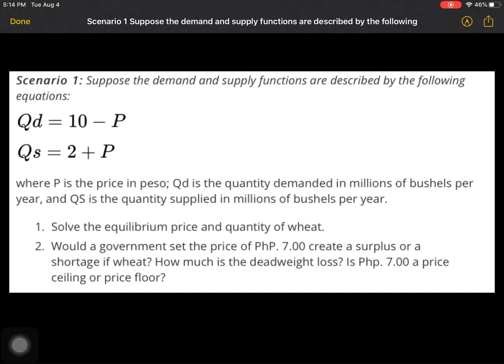we are going to answer scenario number one in the exercises before this video. This exercise is asking you to compute the price ceiling and price floor of the particular government intervention given the particular quantity demand and quantity supply function.